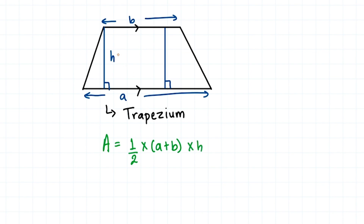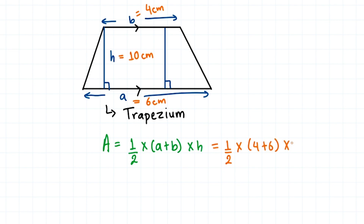For example, if the height is 10 centimeters, B is 4 centimeters, and A is 6 centimeters, then the area is 1/2 times (4 + 6) times 10. We cancel the 2 and the 10 — 2 times 5 is 10 — giving us (4 + 6) times 5, which is 10 times 5, equal to 50 centimeters squared. So that is how we find the area of a trapezium.